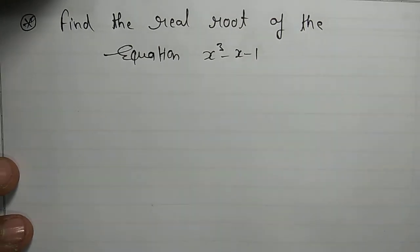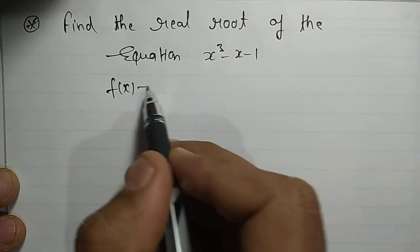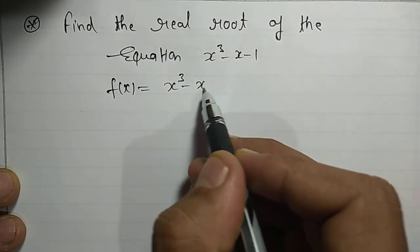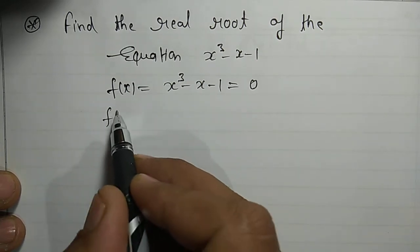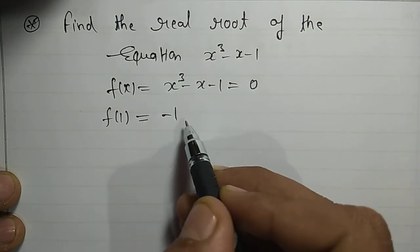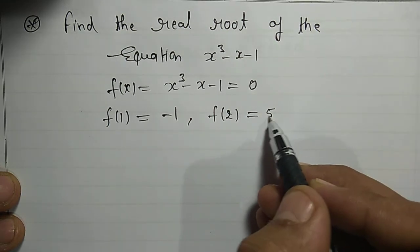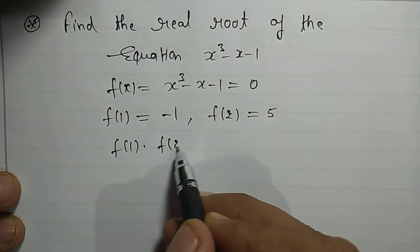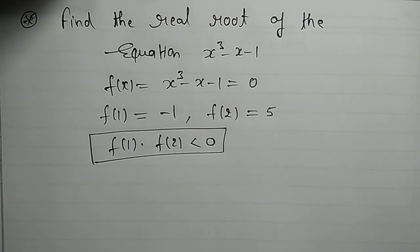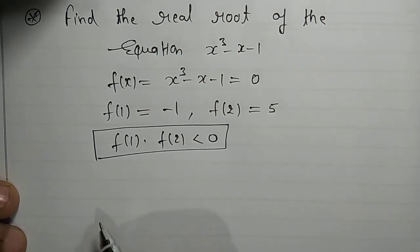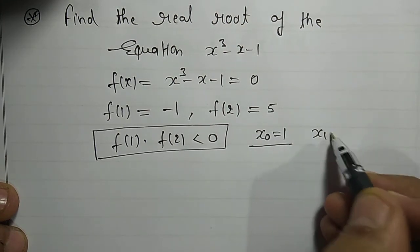Let us see one example. The question is: find the real root of x³ − x − 1 = 0, so f(x) = x³ − x − 1. We check: f(1) = −1 and f(2) = 5. Since f(1) · f(2) < 0, the root lies between 1 and 2. So we take initial approximations x_0 = 1 and x_1 = 2.